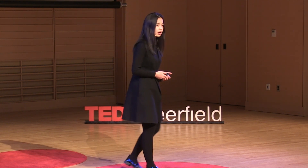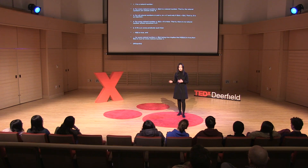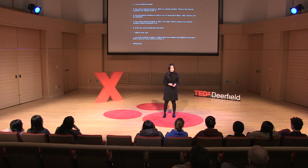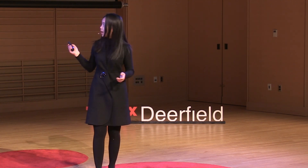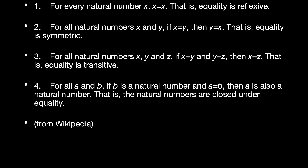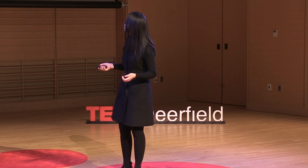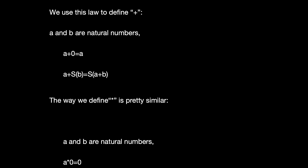Notice that in the equation 1 plus 1 equals 2, there are still elements that are undefined: plus and equals. Let me define what equality means. There are four laws for equality — basically it is symmetric, transitive, and reflexive, and natural numbers are closed under equality. The next step is to define what addition means. We use this law: for natural numbers A and B, A plus S(B) equals S(A plus B), and A plus 0 equals A.